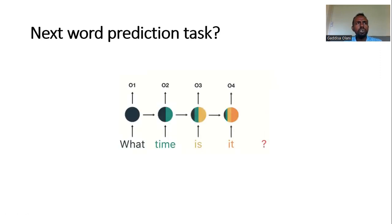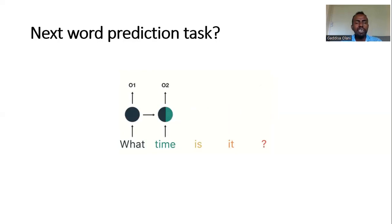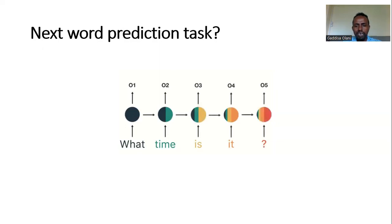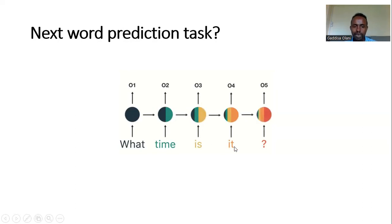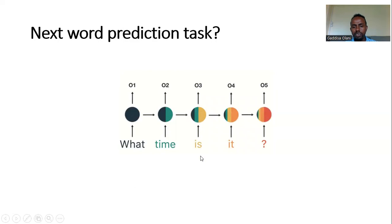NLP research is typical. The problem is that the input is variable — the input is not always the same. For example, an image is not the same as a photo. Next word prediction: let's say the input is 'What time is it?' — this is the input at a given time.